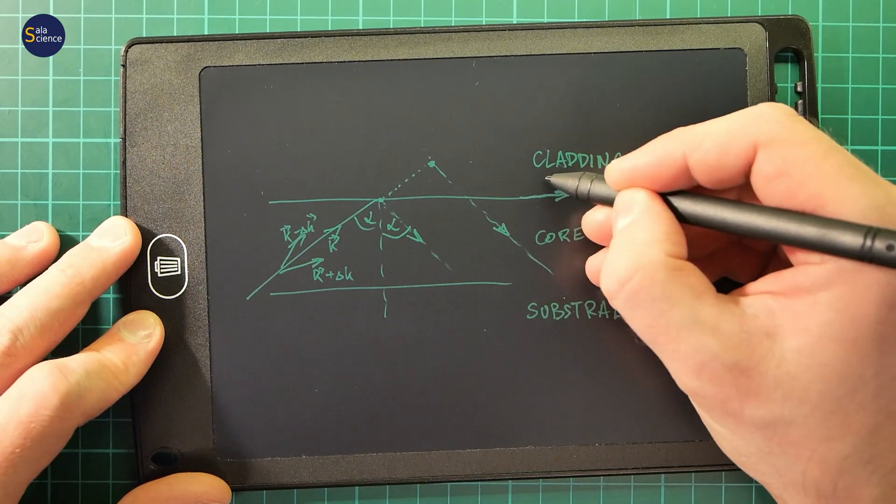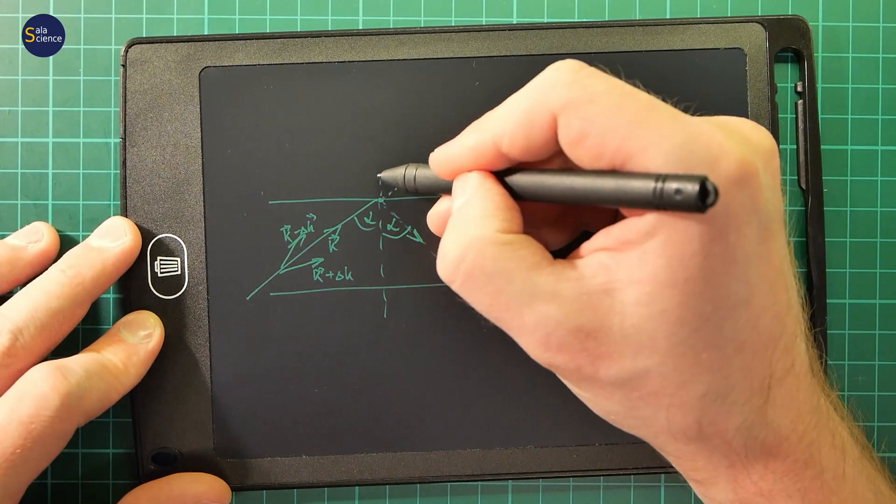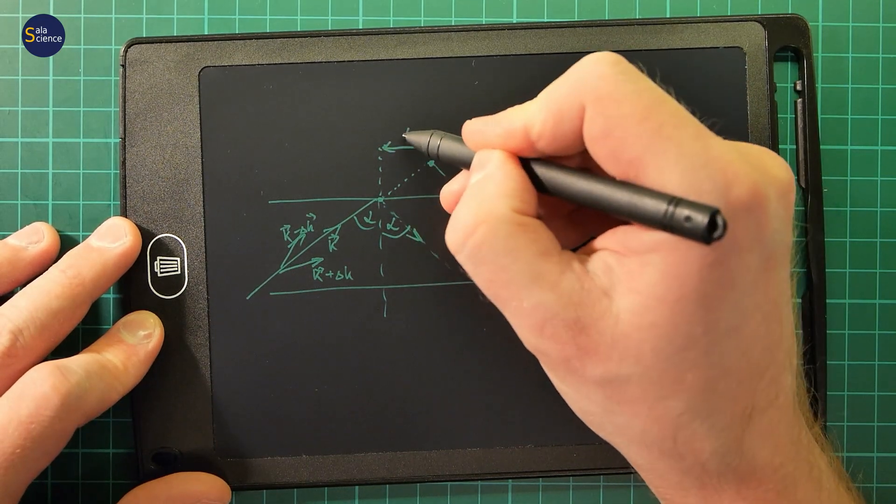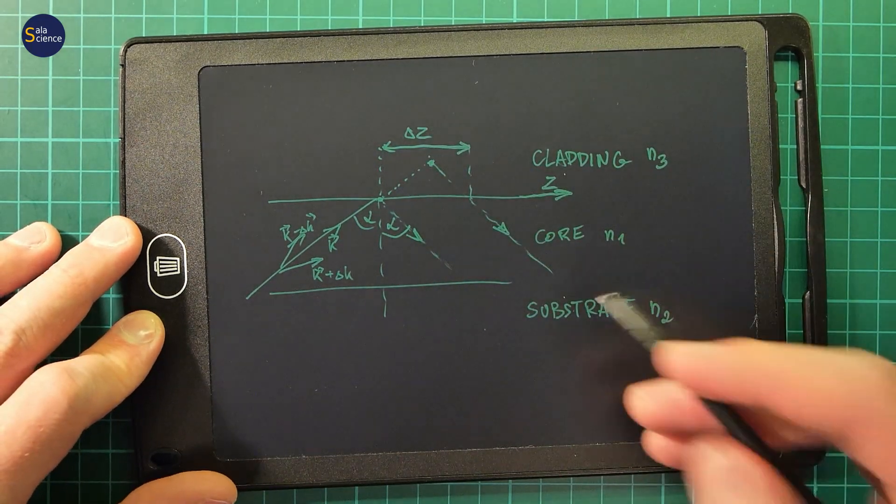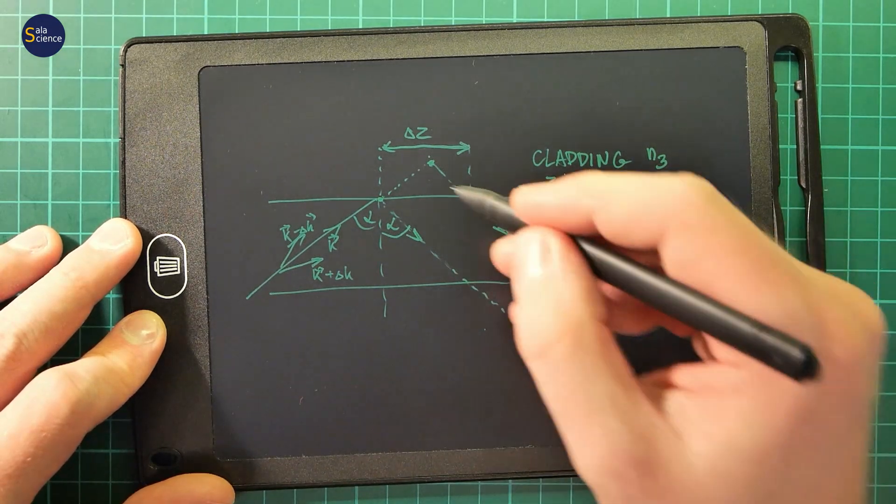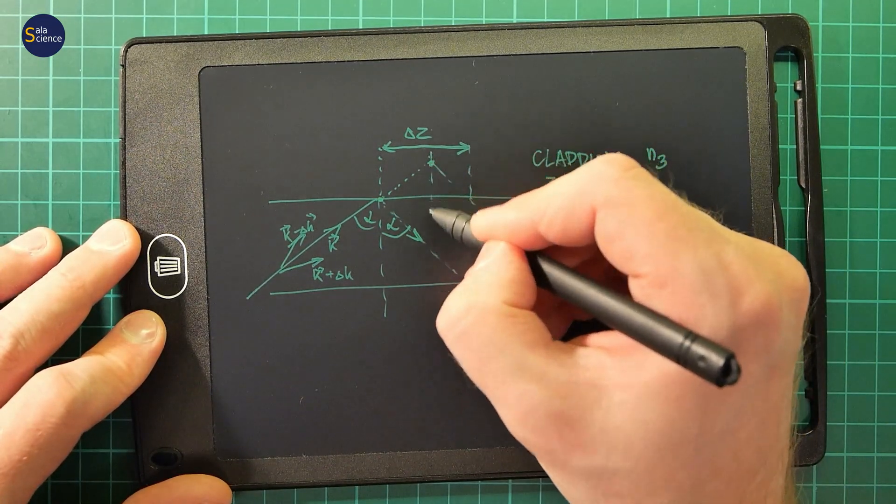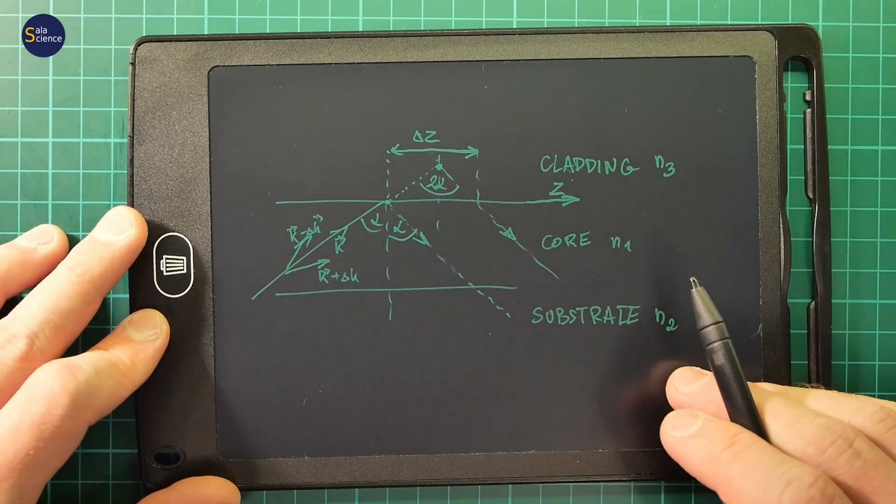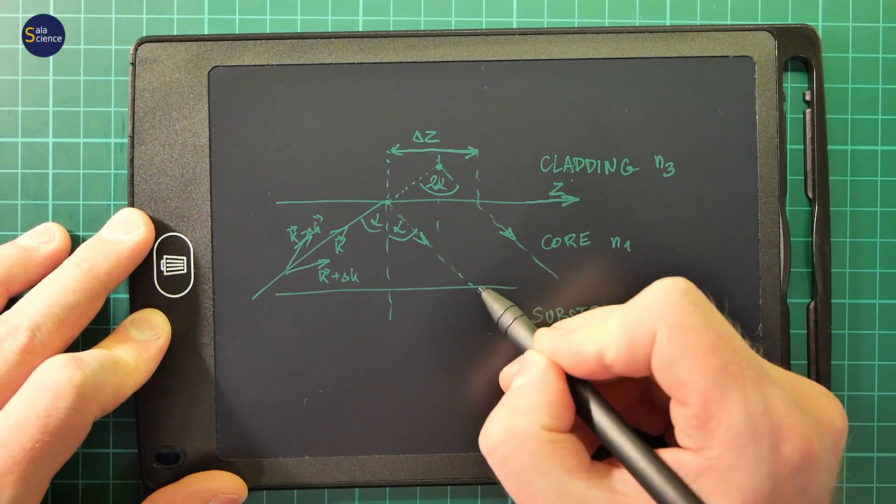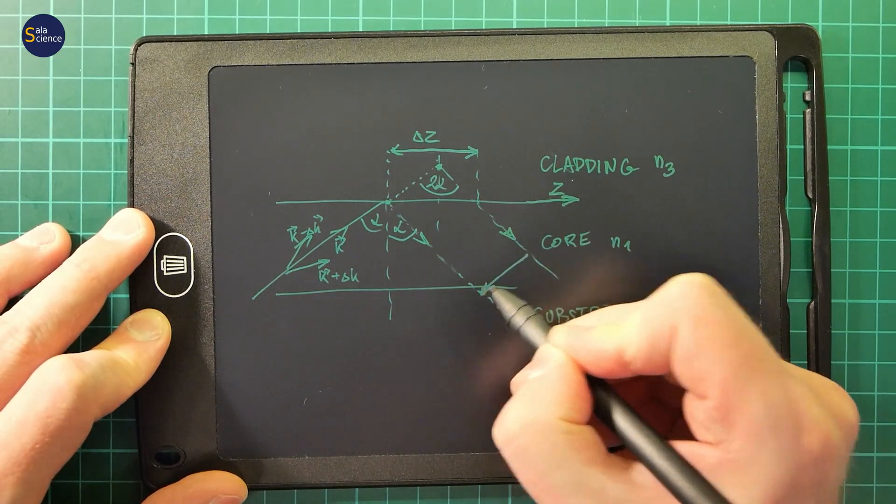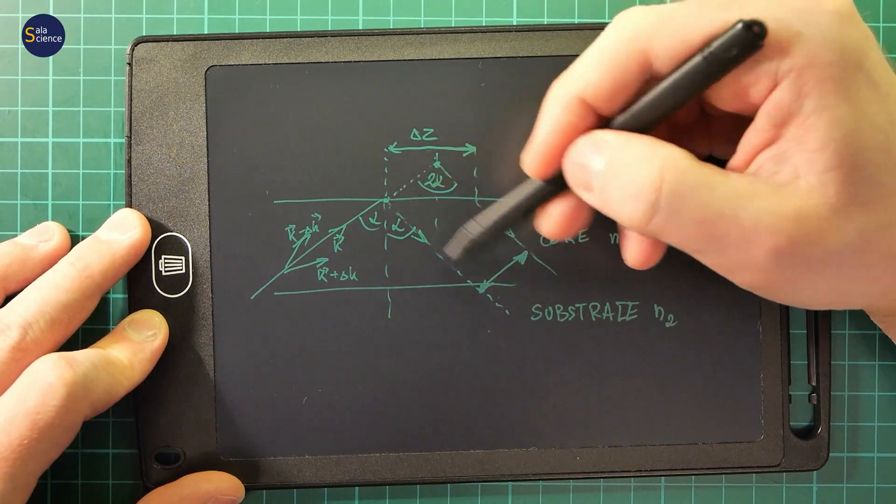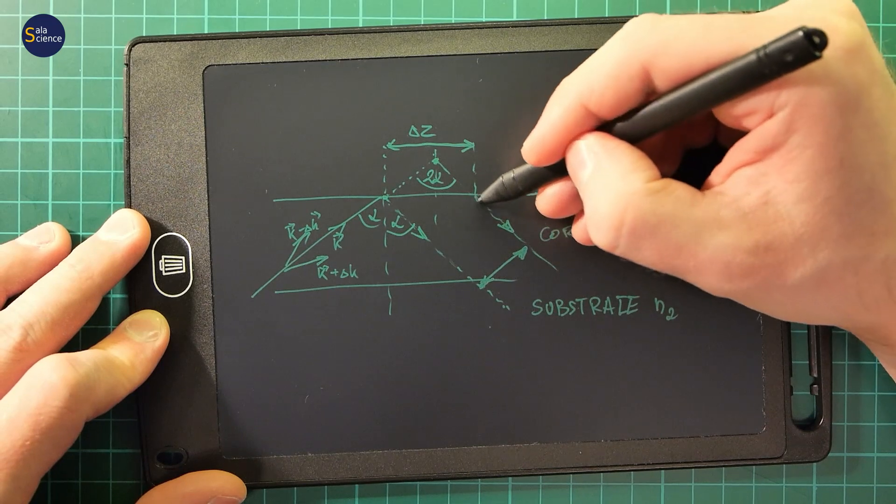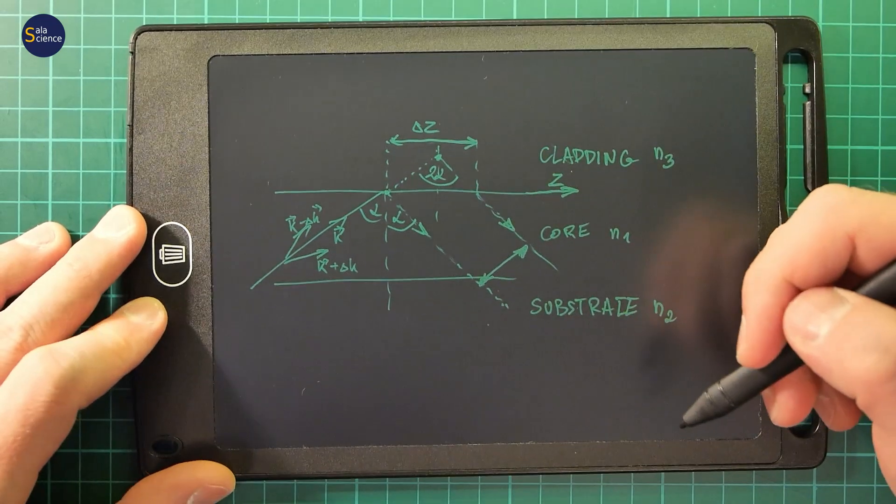So if here is some z, then we have here some delta z, some shift. And here is also 2 alpha here. It's not 90 degrees, just 2 alpha. So we have here a shift between this theoretical geometrical reflection and this real reflection which occurs within a material.